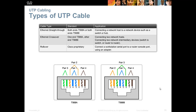If one end is 568A and the other is 568B, you have a crossover cable, used to connect two like devices. PC to PC is a crossover cable; router to router is crossover; switch to switch is crossover; switch to hub is crossover because they are considered similar devices. The one exception is connecting a PC's network card to the fast Ethernet port of a router — that would also be a crossover cable.